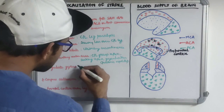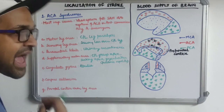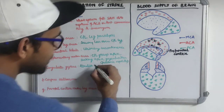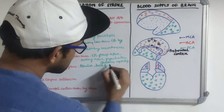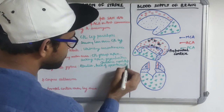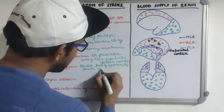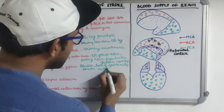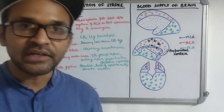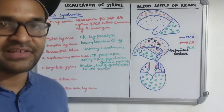Due to involvement of the cingulate gyrus, there is abulia — lack of initiative, lack of will, and lack of spontaneity. There is slowness in activities, delay, and intermittent interruption. In severe cases, it can result in akinetic mutism.